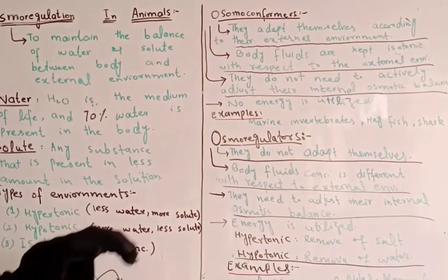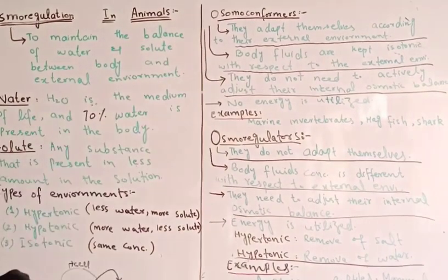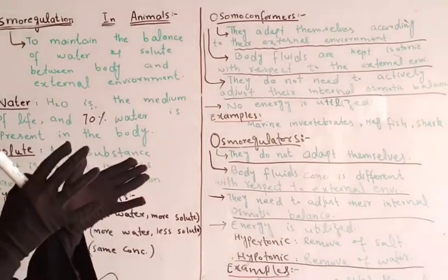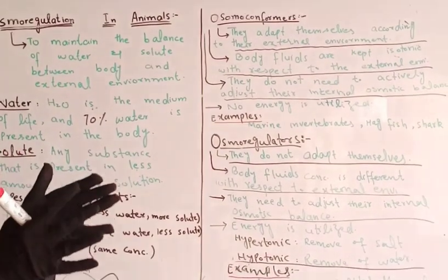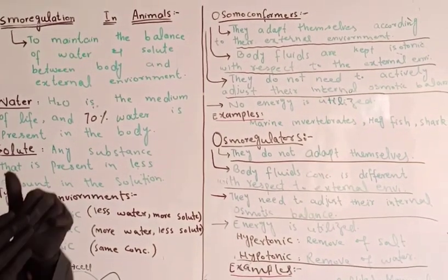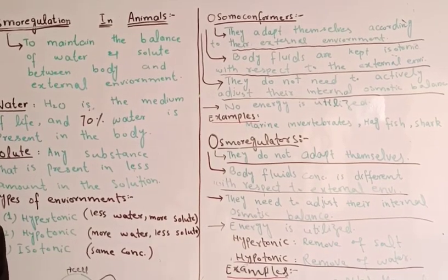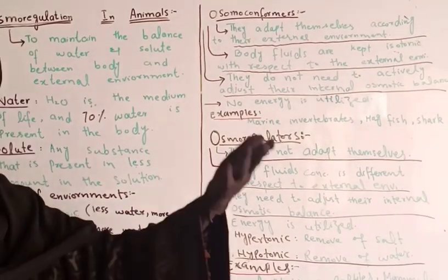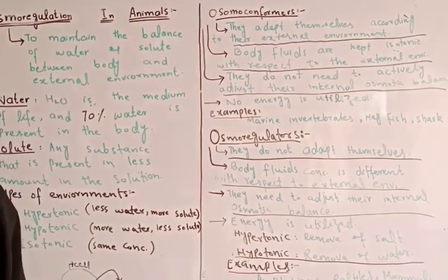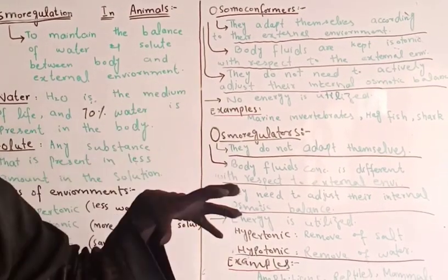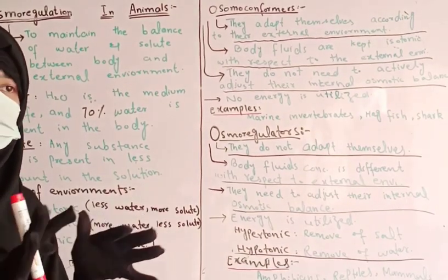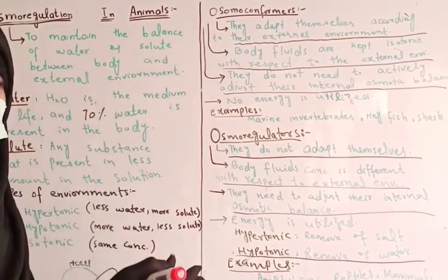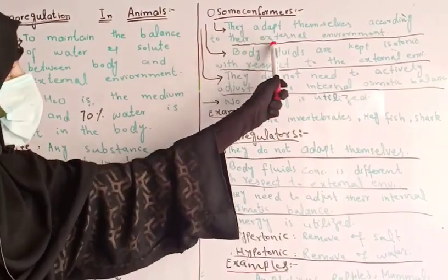Now let's talk about Osmoconformers. These animals, whichever environment they go to, they will adapt their body according to that environment. That means wherever they live, they will become accustomed to it. These animals adapt themselves according to their external environment.